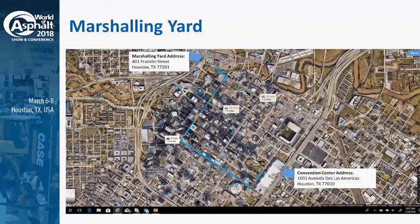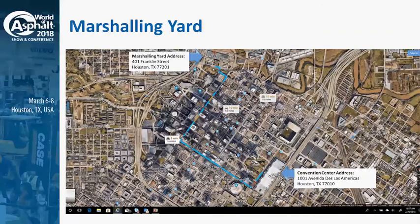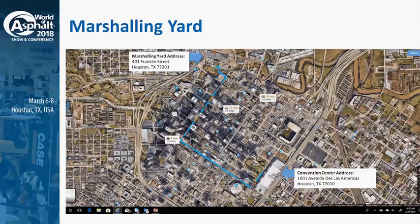Here's a snapshot of the marshaling yard in relation to the George R. Brown Convention Center — it's just a little bit over a mile away, so it should make it pretty easy for us to get shipments in and out to the convention center.